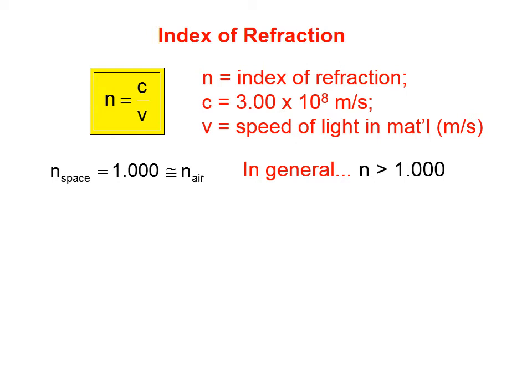But in general, indices of refraction are either 1 or greater than 1. There is, as far as we know, no such thing as an index of refraction less than 1, because that would mean that light would travel faster than light travels, which doesn't make any sense.